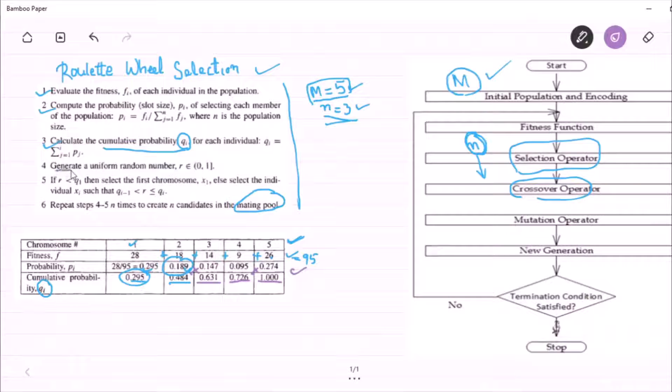Step number 4 says that we have to generate a random number which lies between 0 to 1. Then, we have to compare that random number with the cumulative probability. And based on the comparison, we have to make a decision that which individual is going to be in the mating pool.